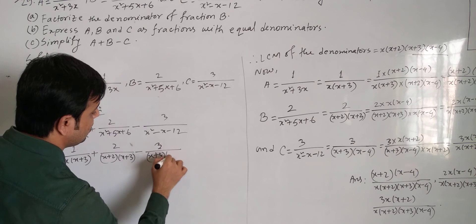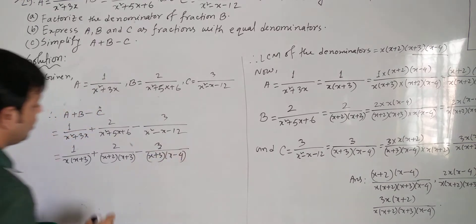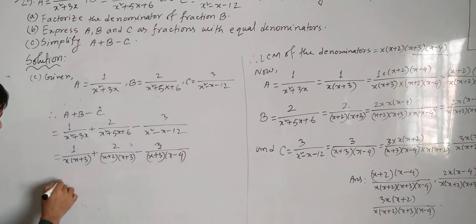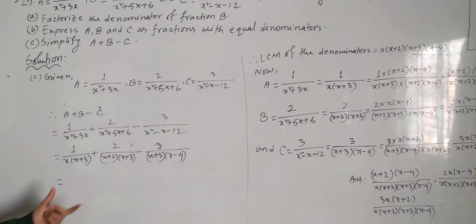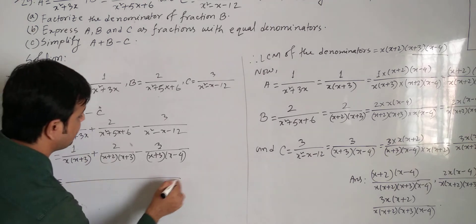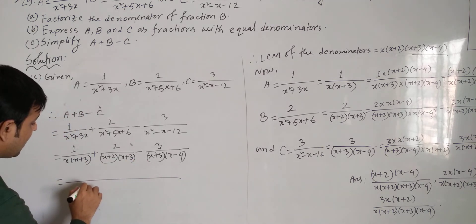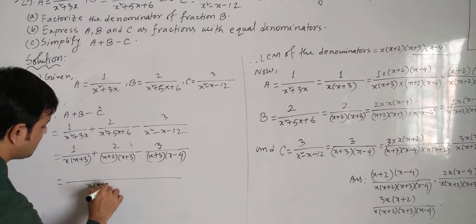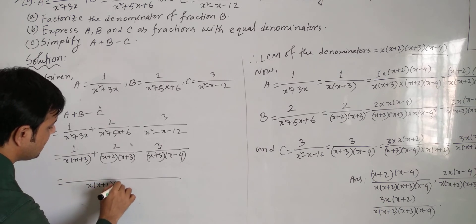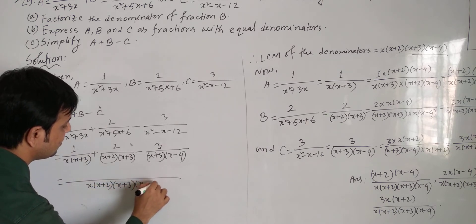After substituting the factorized denominators, we get 1 divided by x(x + 3) plus 2 divided by (x + 2)(x + 3) minus 3 divided by (x + 3)(x - 4). To simplify, we do the LCM of the denominators. The LCM is x(x + 2)(x + 3)(x - 4).